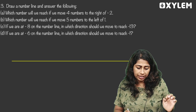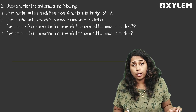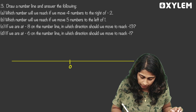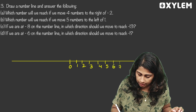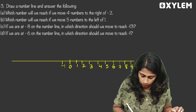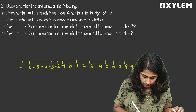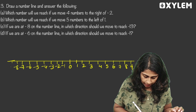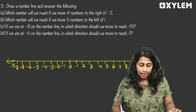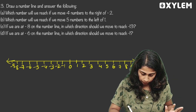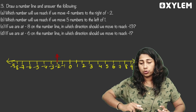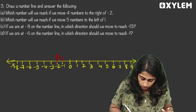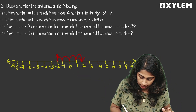Which number will we reach if we move four numbers to the right of negative 2? We draw the number line: negative 9 through 9. Starting at negative 2, moving right 1, 2, 3, 4 — we reach 2. Which number will we reach if we move 5 numbers to the left of 1? Moving left: 1, 2, 3, 4, 5 — we reach negative 4.